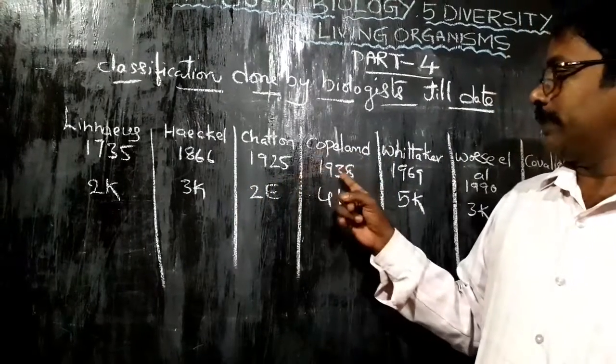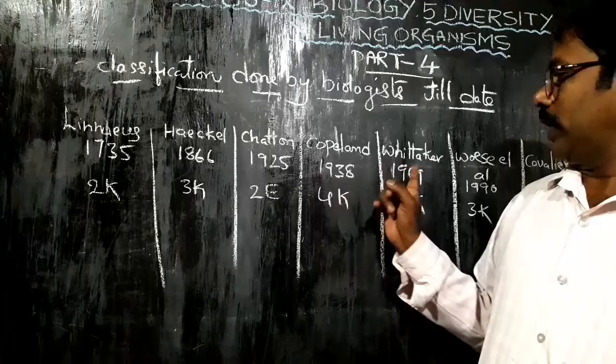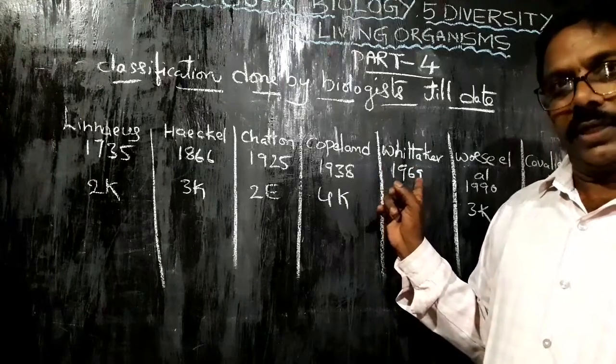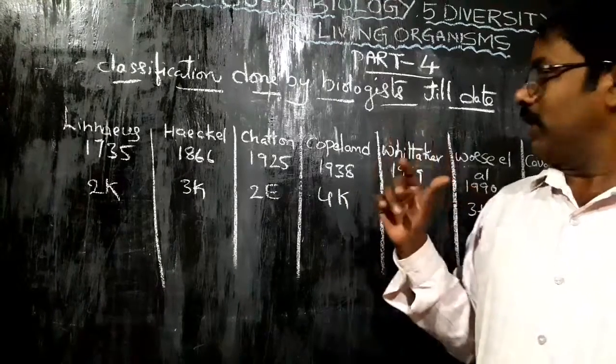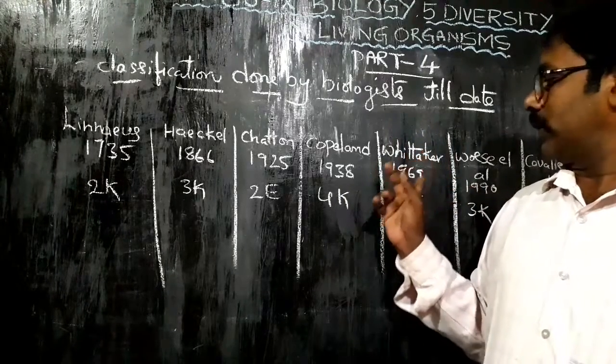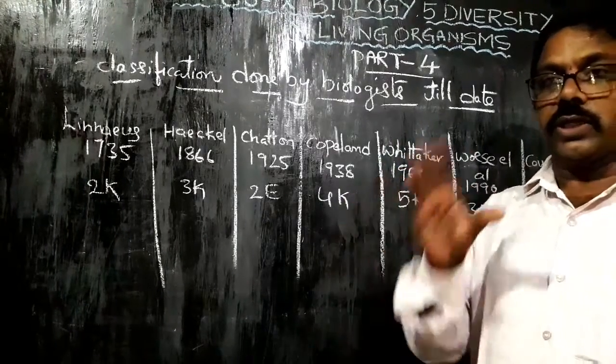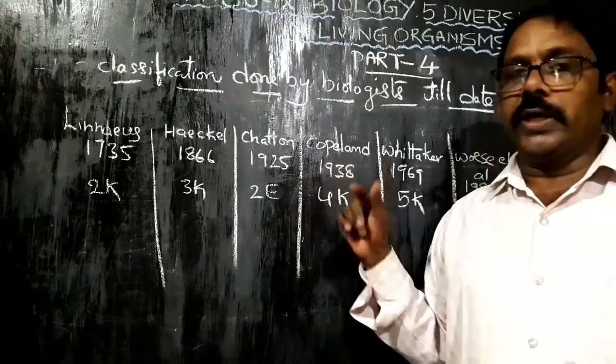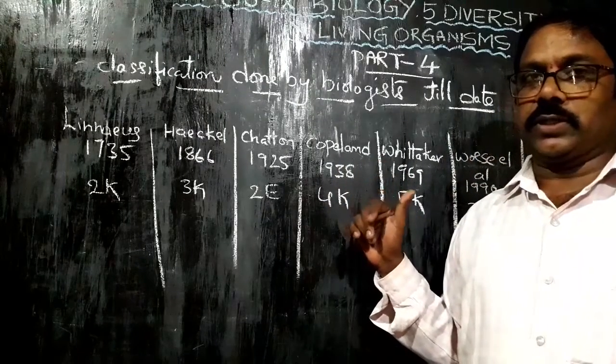About 30 years after Copeland, Whittaker in 1969 discovered the Five Kingdom classification. This classification is one of the most well-known and widely used systems.